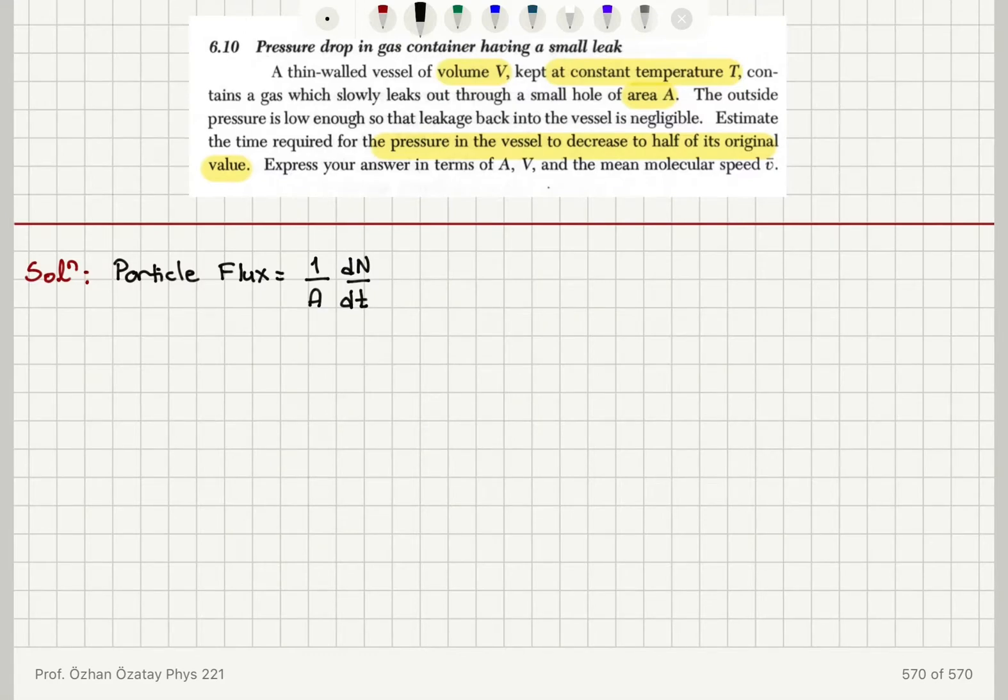The number of particles is changing. If I define particle flux as a constant positive quantity, I need a minus sign here because N is decreasing. The particle flux we have seen is equal to 1 over 4, the number of particles per volume times V-bar, which is 1/4 times N/V times V-bar.